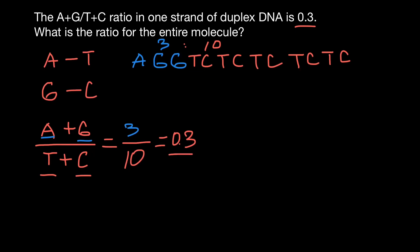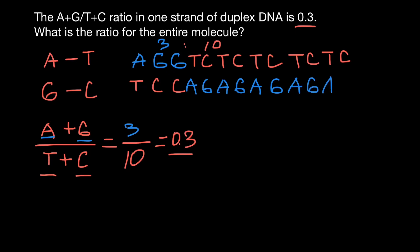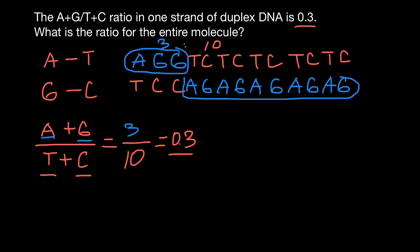Now let's build the other strand of the DNA. According to Chargaff's rule, adenine pairs with thymine and guanine pairs with cytosine. So on the other strand we are going to have thymine, cytosine, and cytosine where the purines were, and adenine, guanine, adenine, guanine, adenine, guanine, adenine, guanine, adenine, and guanine where the pyrimidines were. Now, on one strand of the DNA we have three bases which are adenine and guanine, and on the lower strand we have 10 such bases.